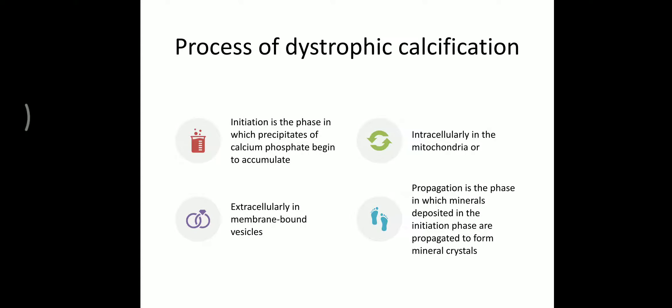The process of dystrophic calcification has two phases. First is initiation, where calcium phosphate accumulates both inside the cell — in the mitochondria — and outside the cell in extracellular membrane-bound vesicles. Second is propagation, where the mineral deposited in the initiation phase propagates to form mineral crystals.